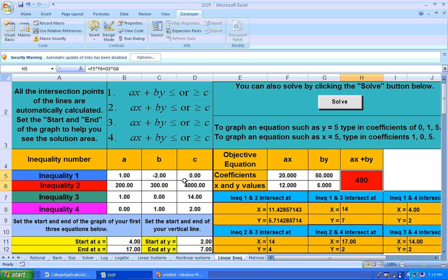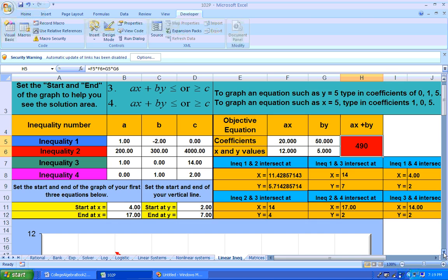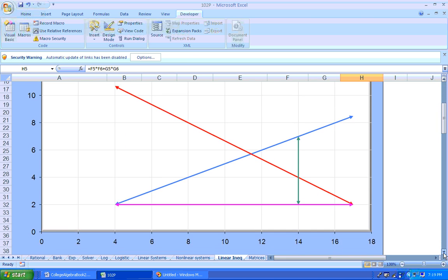Here's my coefficients typed in. Here's my X values. They go from about 4 as high as 17, and my Ys go from 2 to 7. And when you do that, you'll get all the graphs right here.